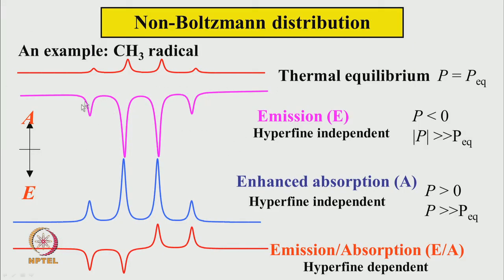One possibility is that all lines get inverted with much greater magnitude than the steady-state intensity — polarization P is negative but large, so we get a huge emissive signal. The relative intensity is still 1:3:3:1, so polarization is hyperfine-independent. The other possibility is absorptive polarization where P is greater than 0 and much bigger than equilibrium — a huge absorptive signal with relative intensities the same as the thermal population; again hyperfine-independent.